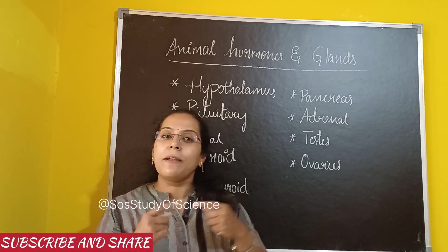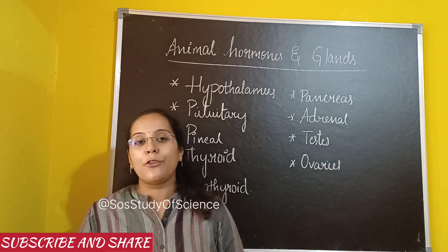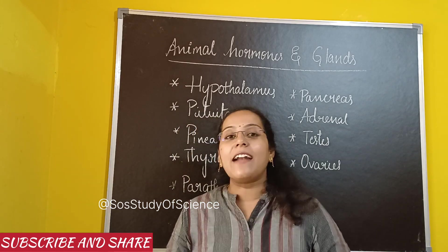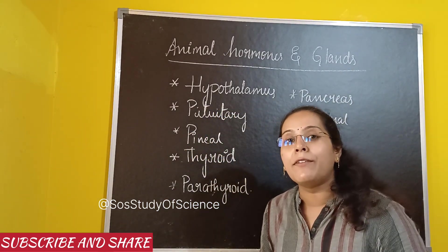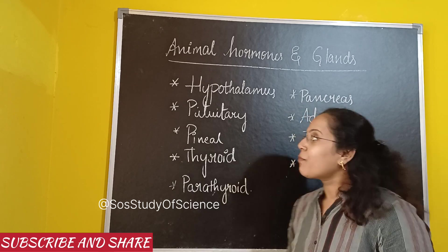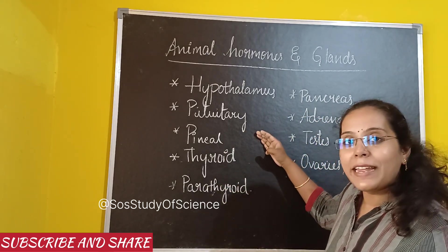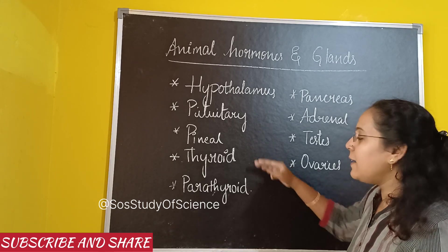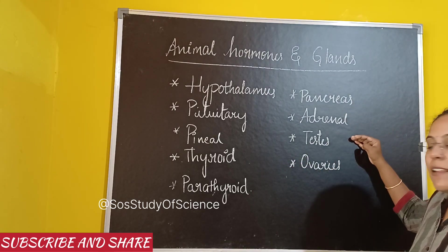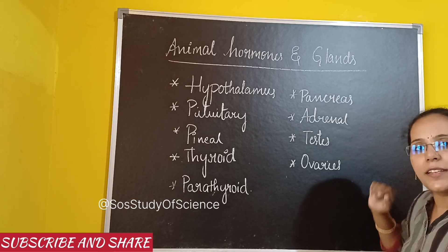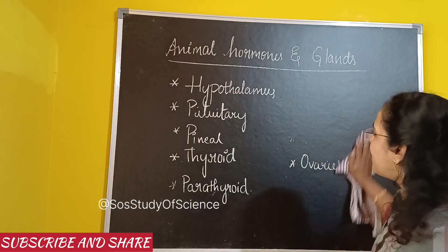I also explained about endocrine glands and exocrine glands in my previous videos — you can check those. Now let us summarize which are the different glands present in our textbook: hypothalamus, pituitary gland, pineal gland, thyroid gland, parathyroid gland, pancreas, adrenal, testis, and ovaries. Let me explain about each of these in detail.